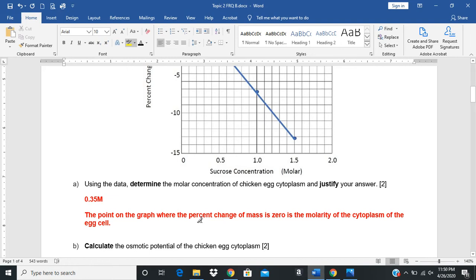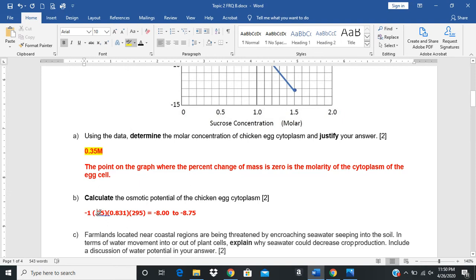Then they want you to calculate the osmotic potential. To do that, we're going to plug in this number - we're going to plug in the molarity into the negative ICRT formula. That's negative 1 times 0.35, because we're dealing with sucrose, times 0.0831 and 295. That comes out to somewhere between negative 8 to negative 8.75.